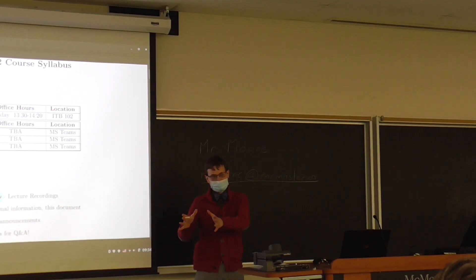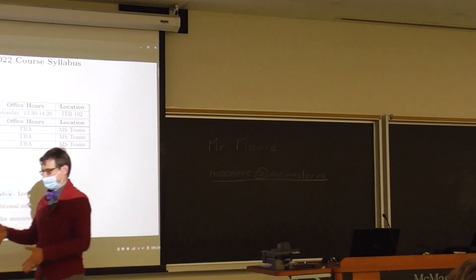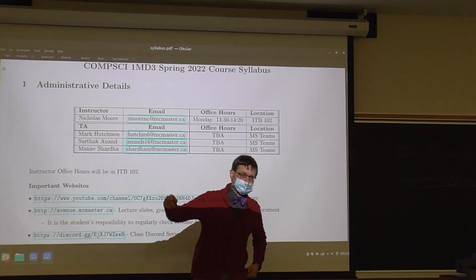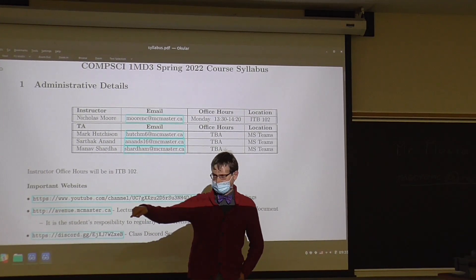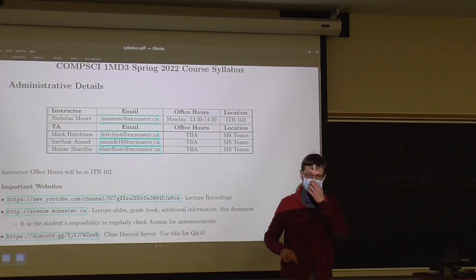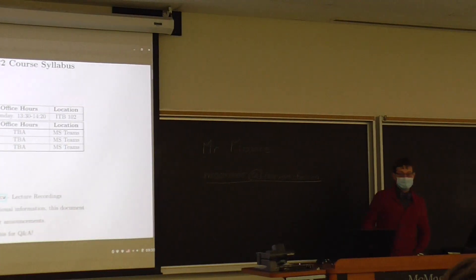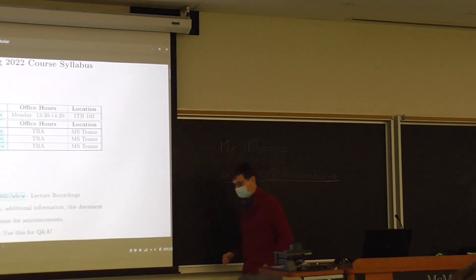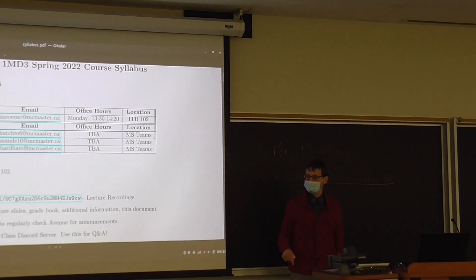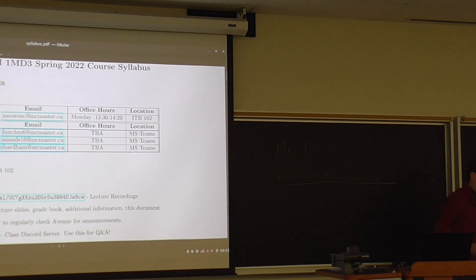Basically, the general rule is you need to get a B in the direct prerequisites to a course in order to be able to take that course at the second level. So, given that this course is prerequisite to pretty much everything, you should be shooting for a B. I don't make the rules, I just follow them.